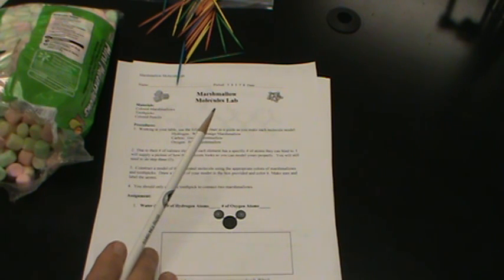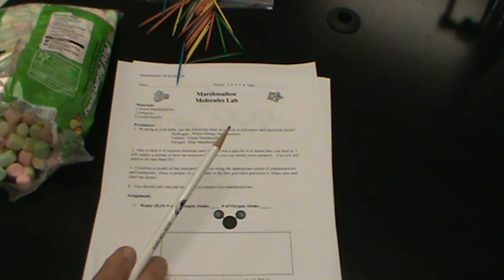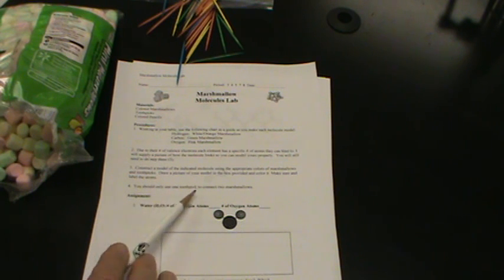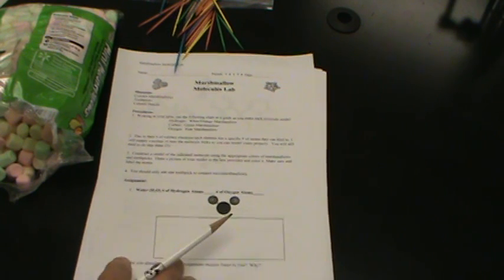One of the things that we did differently was we don't have a lot of colored pencils, so I just wanted to make sure that my students could draw the molecule in the box. You should only use one toothpick to connect two marshmallows. Now for those of you in advanced chemistry classes where you know of the double and the triple bonds that some of these atoms can have, please feel free to use two or three toothpicks to indicate your different level of bonding.